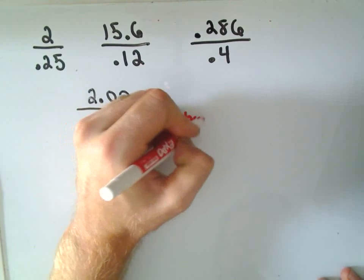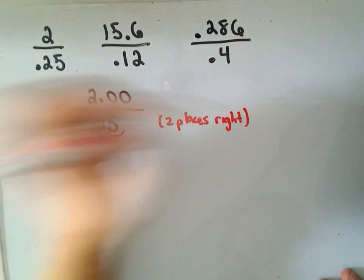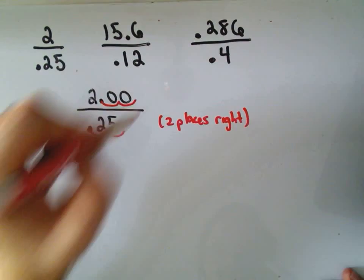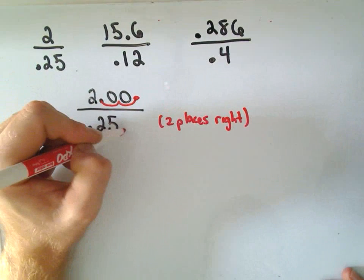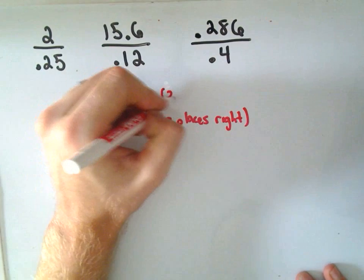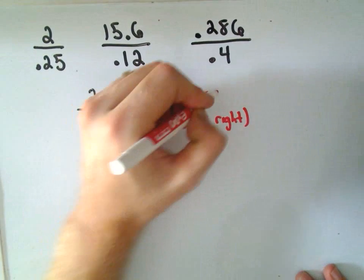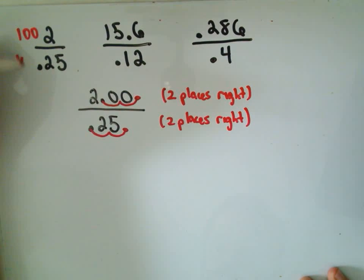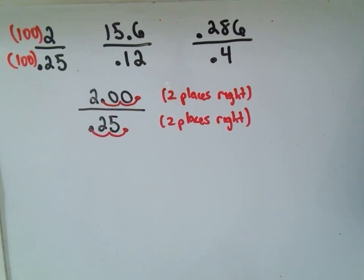If you move the decimal place in the bottom two places to the right, to keep this an equivalent fraction, you also have to move the decimal place two places to the right in the numerator and the top of the fraction as well. Really, arithmetically, all we're doing is we're multiplying the top and bottom of the original fraction by the number 100. That has the effect of moving the decimal place two places to the right in both top and bottom.